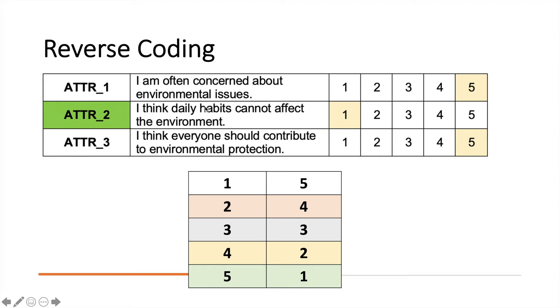So this question here is negatively coded. So what we have to do, we have to do reverse coding where number 1 would become number 5, number 2 will become number 4, number 3 remains, number 4 will be number 2, and number 5 will be number 1. Now, SPSS can help us to do the reverse coding. So let me show you how we do it.